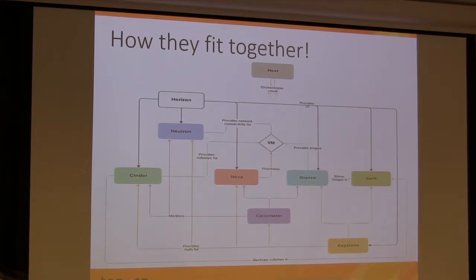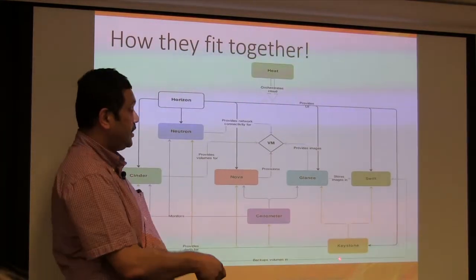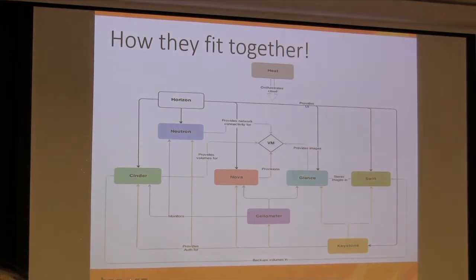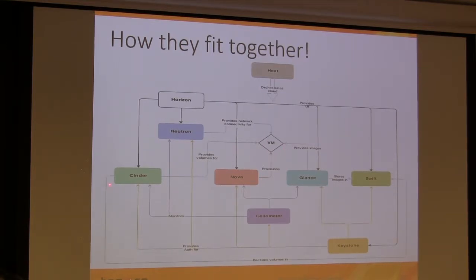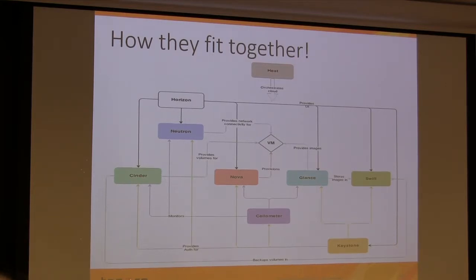Think about spinning up a VM. What happens? Keystone checks if you can. Nova provisions one, but what will it boot with? Glance gives you an image, and you get that off Swift. Once you get a VM, you connect it to a Cinder volume and give it a network from Neutron. Then if all those things work, you'll be able to connect to that VM. Heat orchestrates all of this. And if you ever want to take a backup — interesting in the case of databases — backups typically end up going to Swift as well.